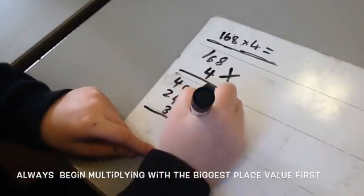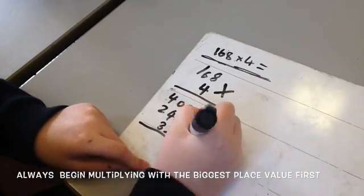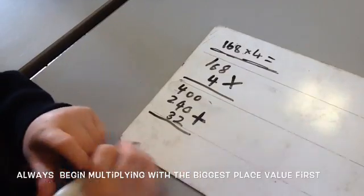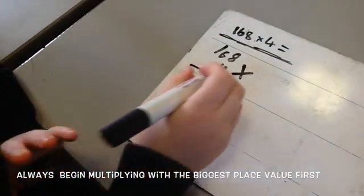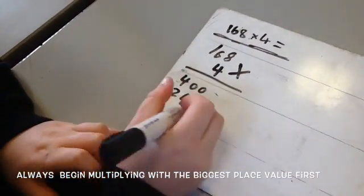Now you add them all up. You need to put in the sign for addition. 0 plus 0 plus 2 equals 2.